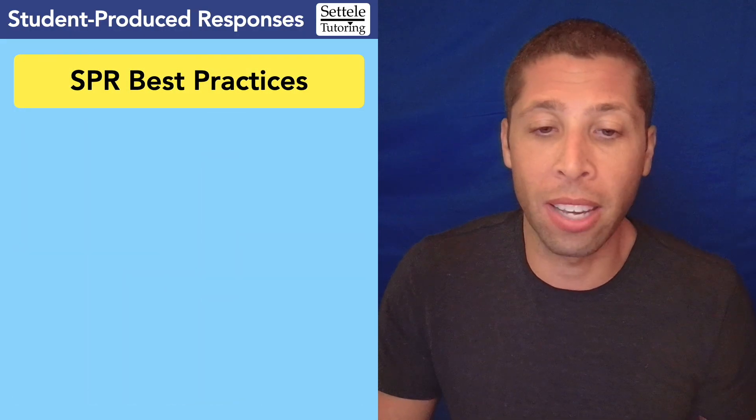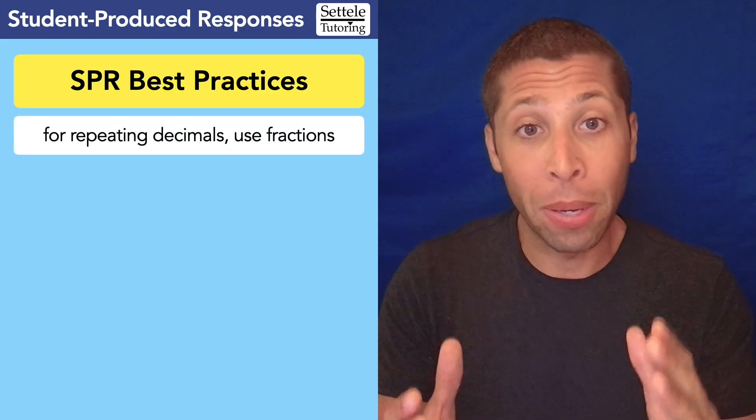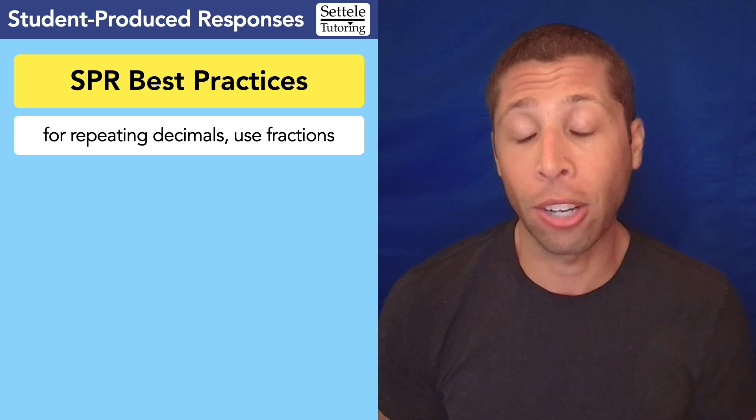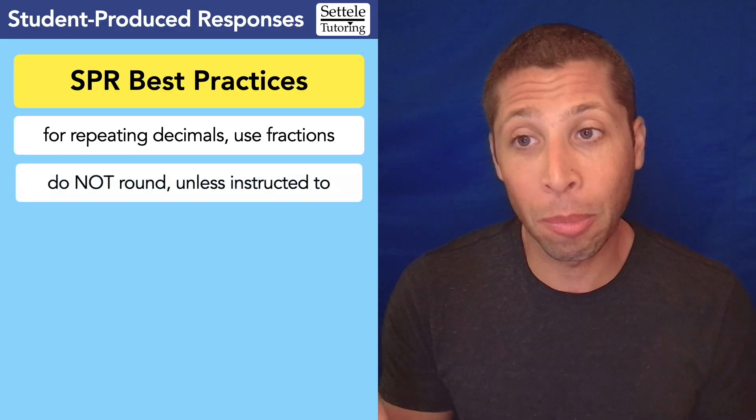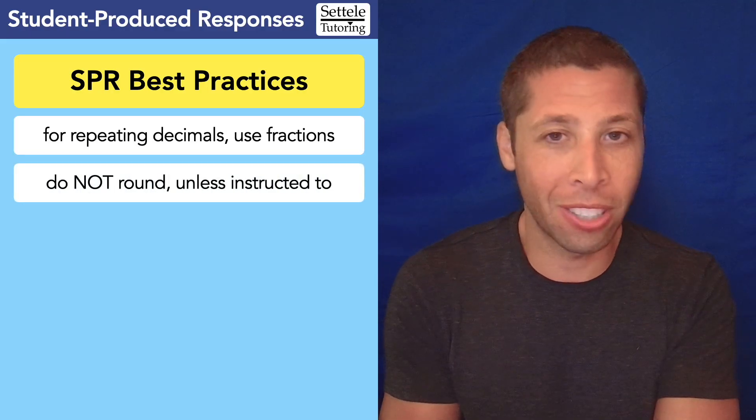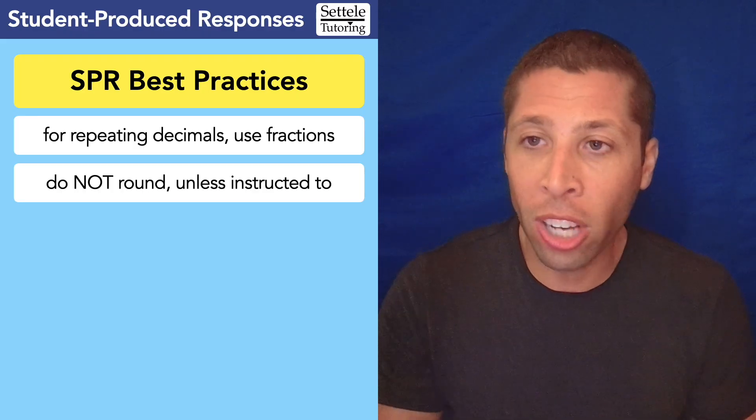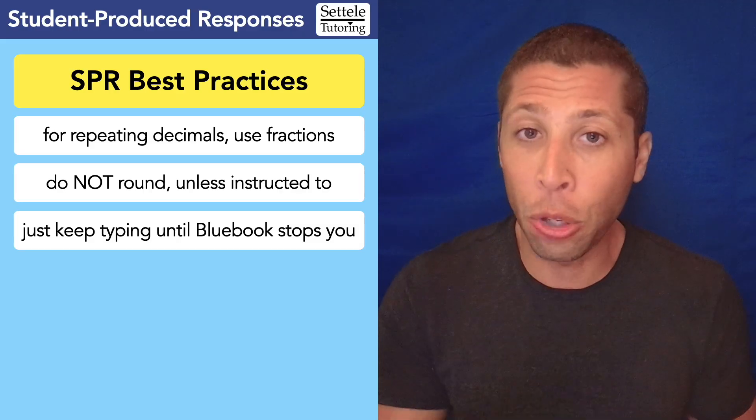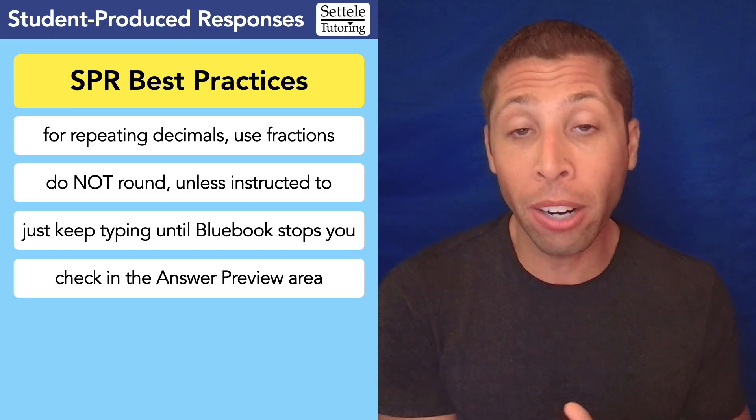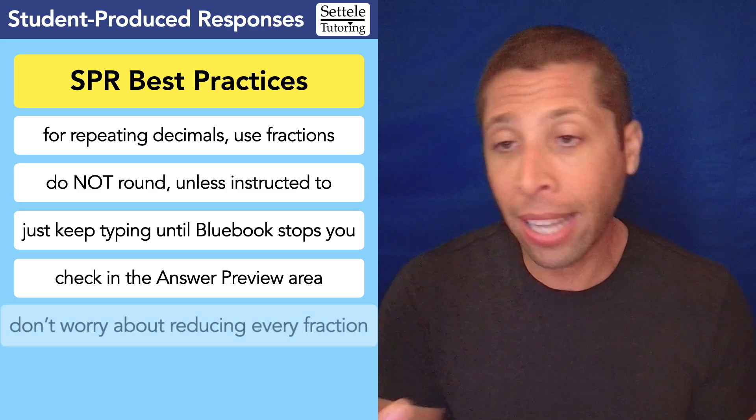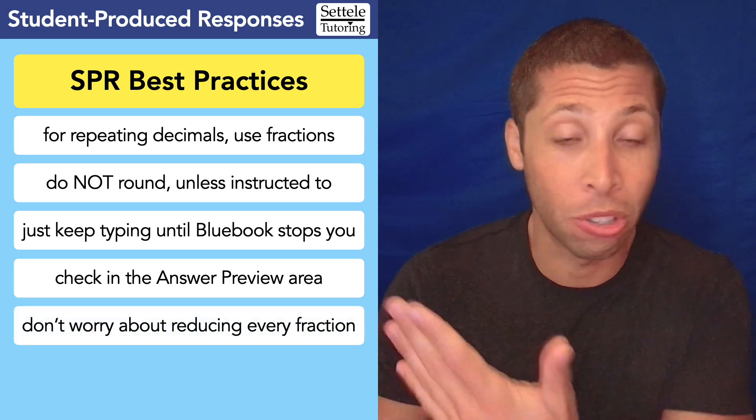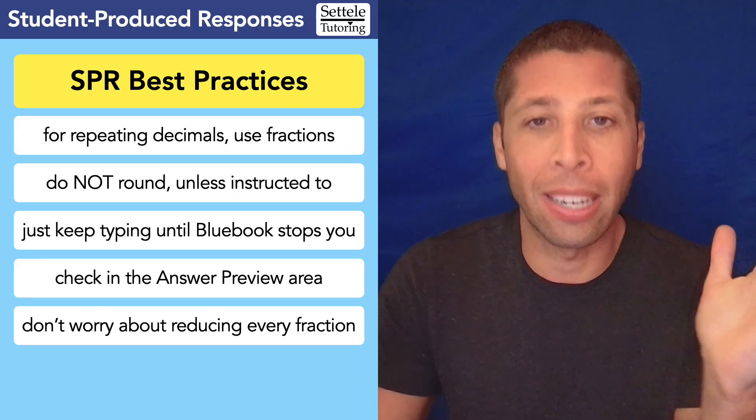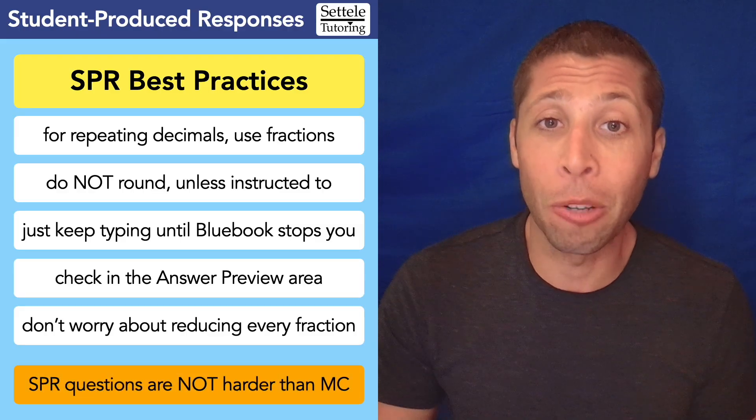And so let's look at some best practices for these SPR questions so we don't lose points unnecessarily. Like I just said, for repeating decimals, your best option is to use the fraction equivalent. Remember that Desmos and most calculators will have the ability to convert a decimal into a fraction. Use that and enter the fraction if you can. If you have to put a decimal in, do not round that decimal unless you're instructed to. If it says go to the nearest tenth or the nearest whole number, then yes, round it off. But if it doesn't, just keep typing until Bluebook stops you. You do not need to round the last digit. Just keep going and it will truncate it wherever you run out of characters. And you can check your answer in the answer preview area to make sure that you're entering it correctly in the Bluebook app for those SPR boxes. And like I said, don't worry about reducing every fraction. If you get something that's kind of normal, like four sixths, I would hope you would recognize that as two thirds pretty quickly. But if it's something you don't know and you're worried if it's going to be divisible by seven or eleven, don't worry about it. If it fits, you can enter it.